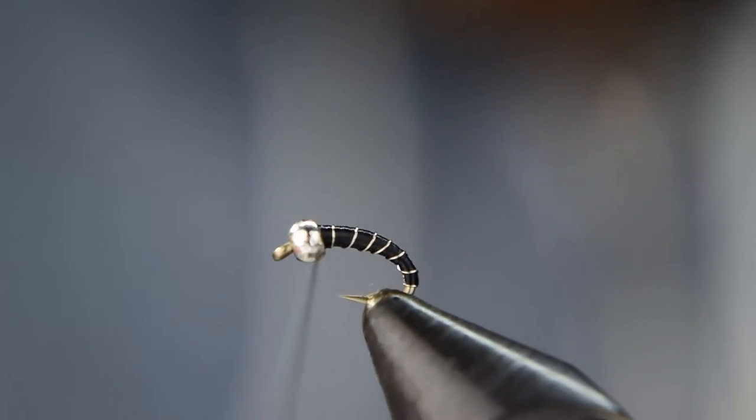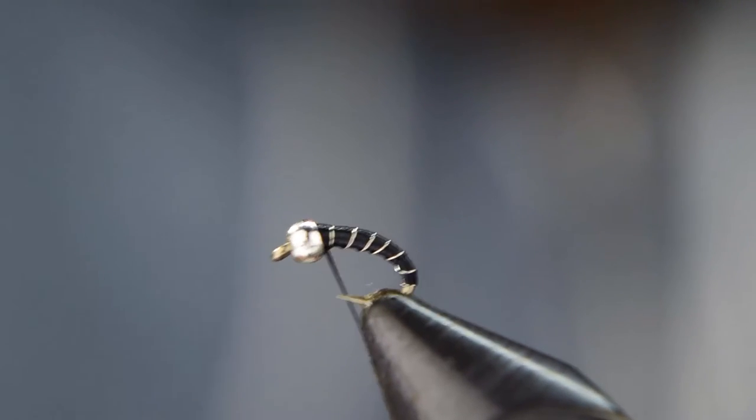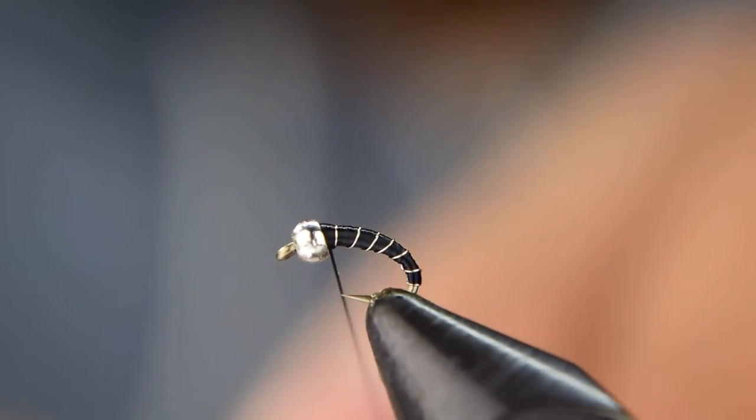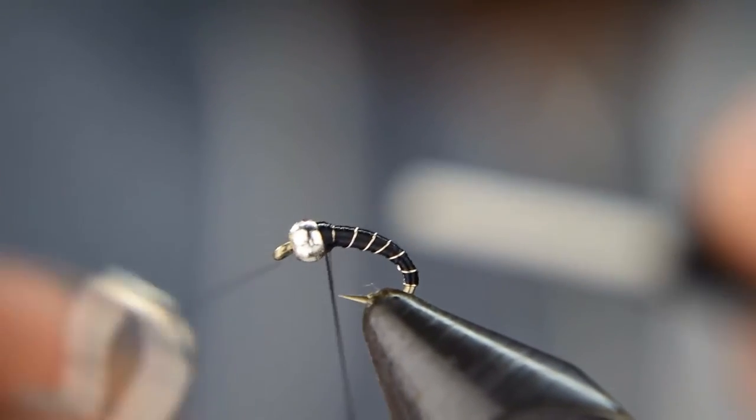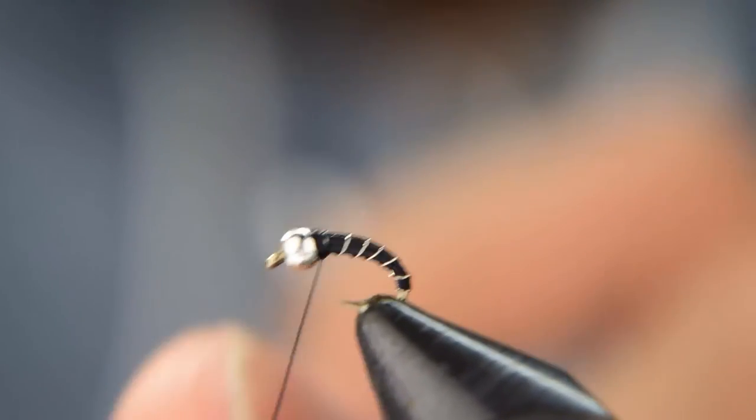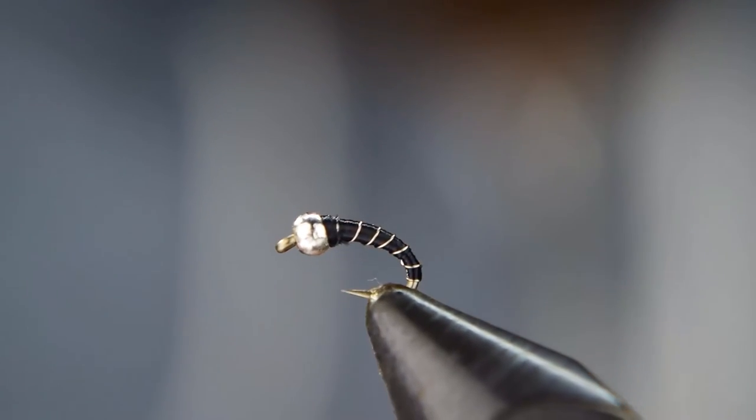Then you're going to wrap around a couple more times here to build up a little head and grab your whip finish tool. Do a three or four turn whip finish. Make sure that knot is nicely seated and cut it off.